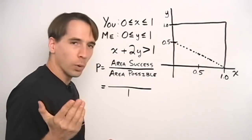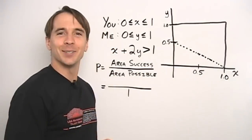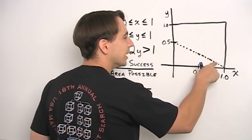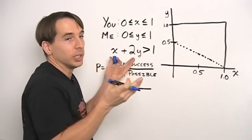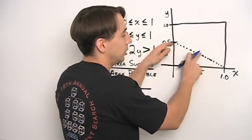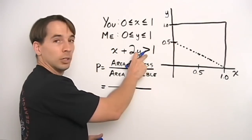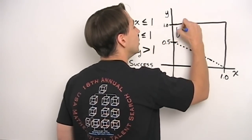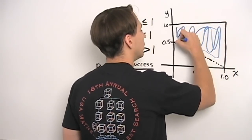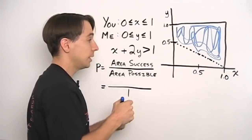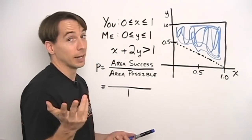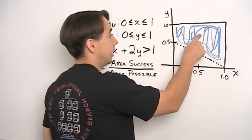So where are the successes — the points representing you going to Disney World? You need x plus 2y to be more than one. You can get there by increasing x or increasing y from the boundary line, so the success region is everything above and to the right of the line. Below the line is the bad region where x plus 2y is less than one.